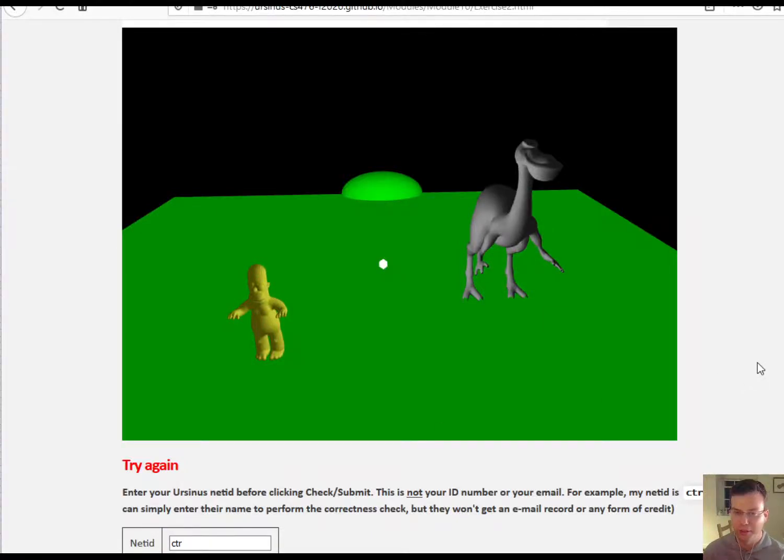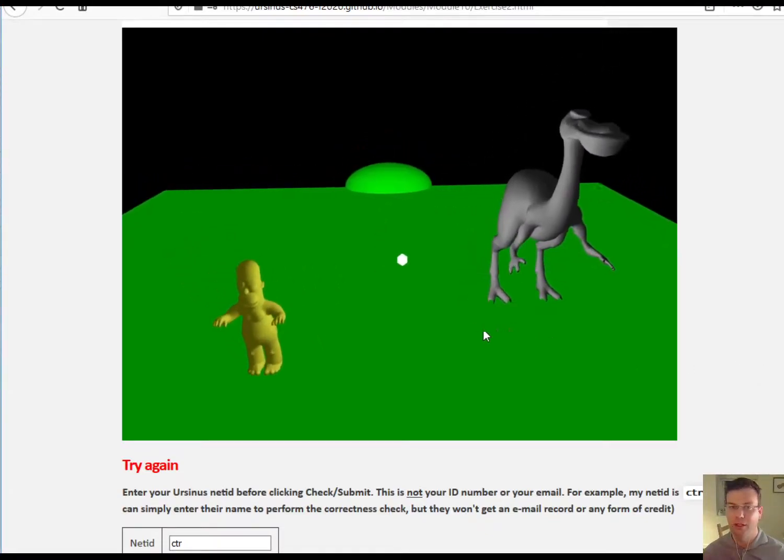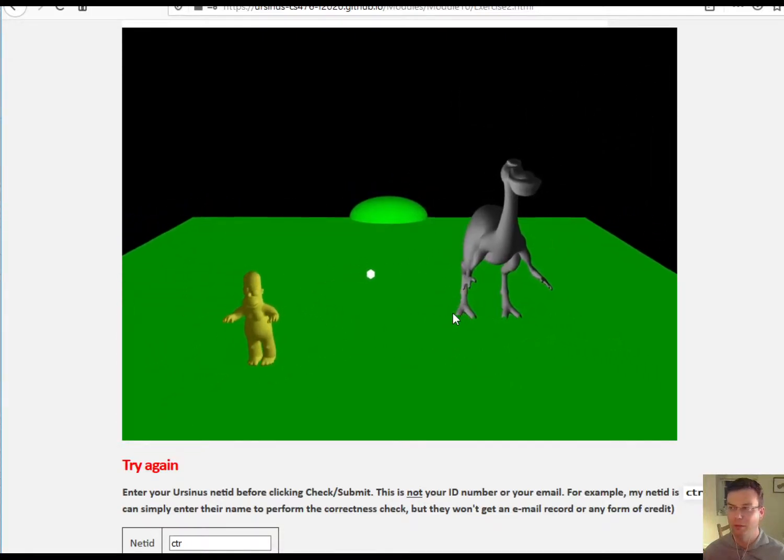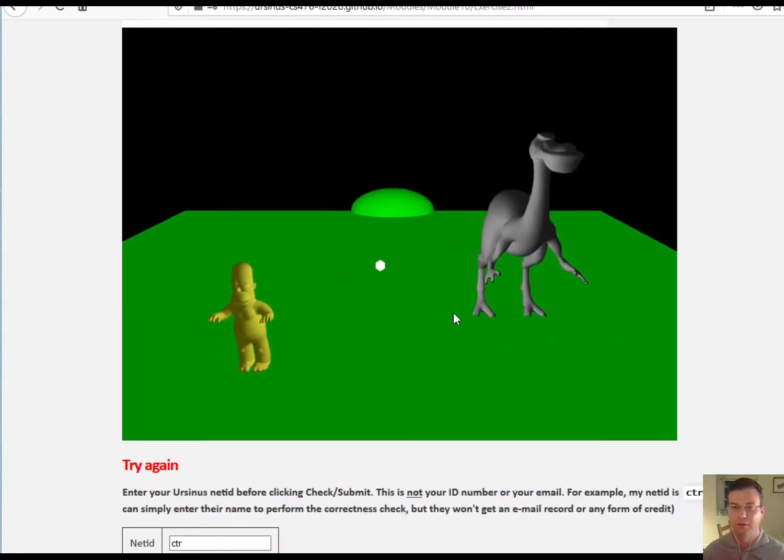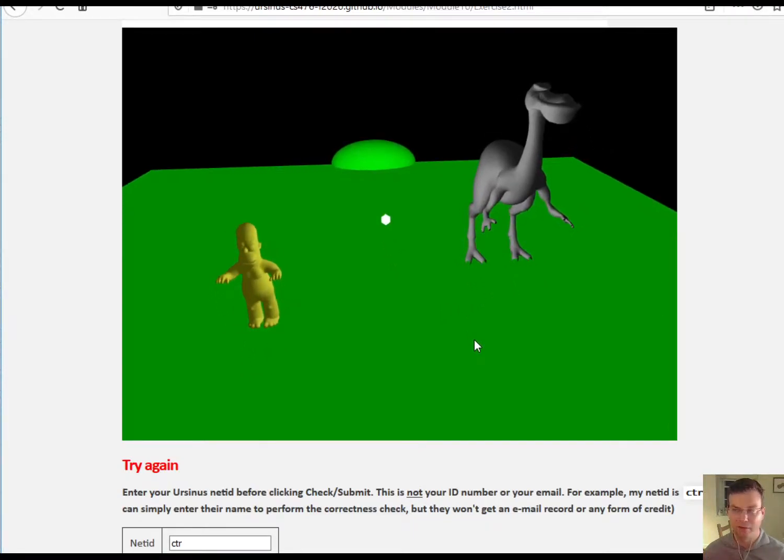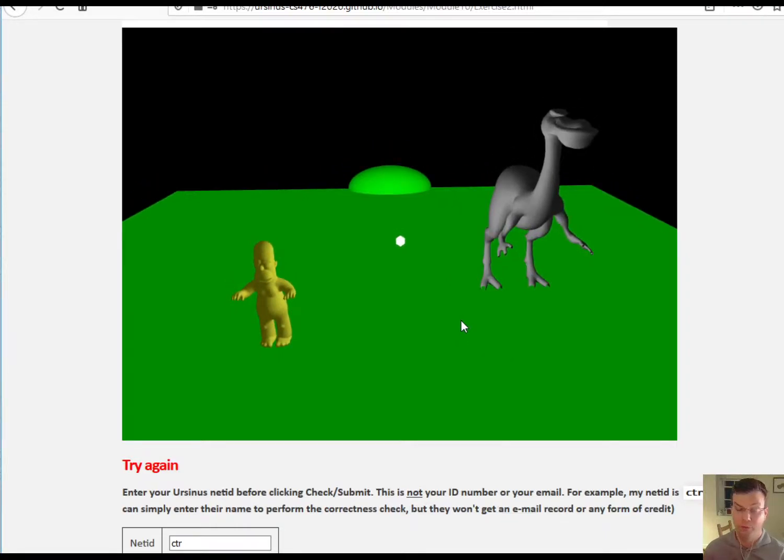Alright, so nice job getting the Diffuse Lambertian shading done. This looks quite nice. This is all we need to get a basic renderer, and as I said, it's physically realistic - this is the way that seasons work, for example. But it is a little bit bland in some ways. If you're going to insist that it absorbs the light and reflects it equally in all directions, then there are certain effects that you can't do.